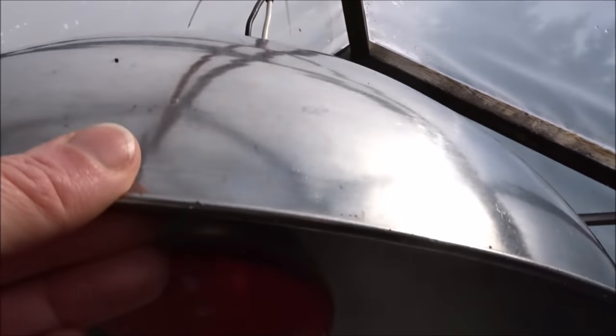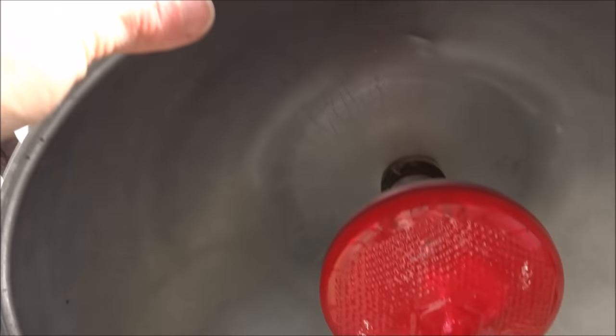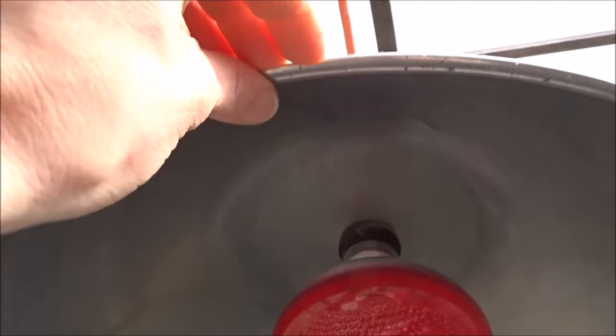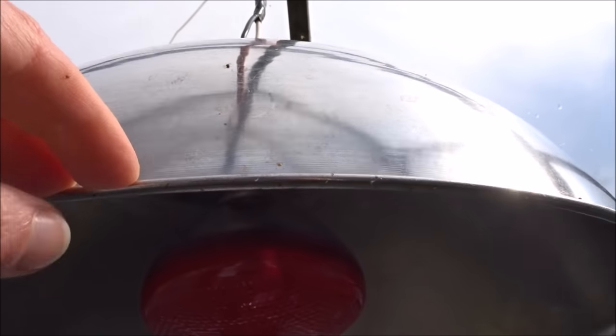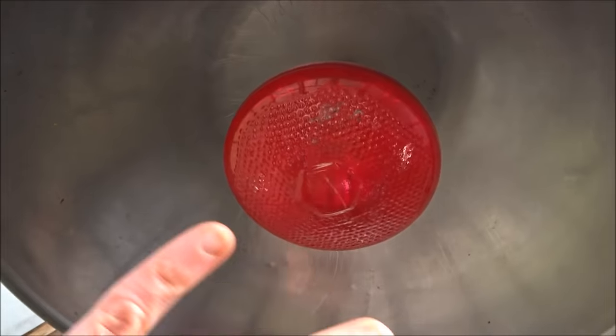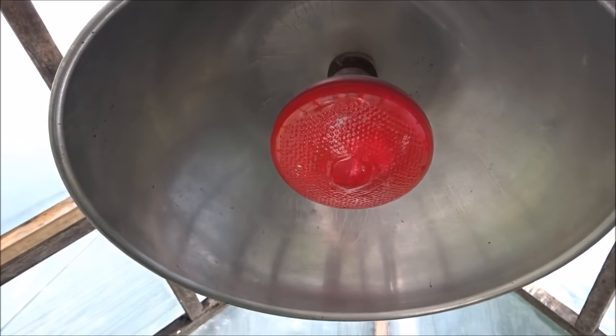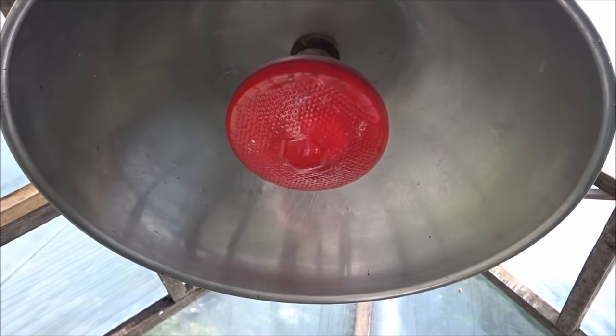Then we put the pigtail through. When we had the chickens, we wrapped some chicken wire around this little lip here and had a chicken wire dome on it just to keep any feathers or wings from touching the light bulb.